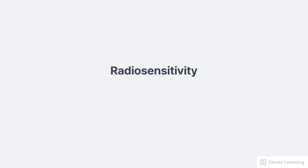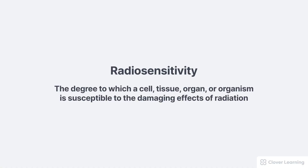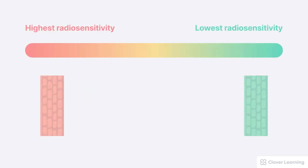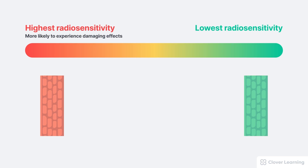Radiosensitivity is the degree to which a cell, tissue, organ, or organism is susceptible to the damaging effects of radiation. If a tissue has a high radiosensitivity, that means it is more likely to experience the damaging effects of radiation, like cell death or cell mutation. For these highly sensitive tissues, it doesn't take as much radiation dose for them to be harmed.